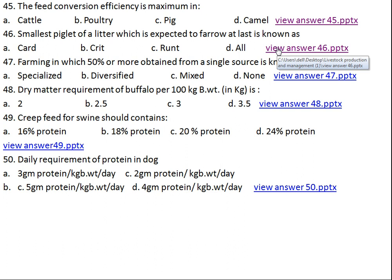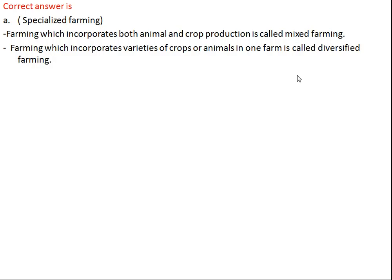Question number forty-seven: farming in which 50% or more income is obtained from a single source is known as what? Option A: specialized farming, Option B: diversified farming, Option C: mixed farming, Option D: none. The right answer is specialized farming. Farming which incorporates both animal and crop production is called mixed farming. If there are varieties of animals and crops then it is known as diversified farming.